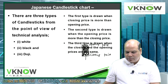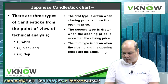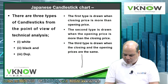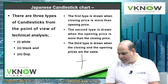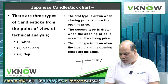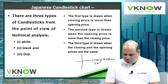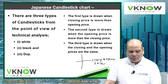The third type is drawn when the closing and opening prices are the same. So you draw it like this and there is no body because both prices are the same — it will just be one line showing closing and opening price.